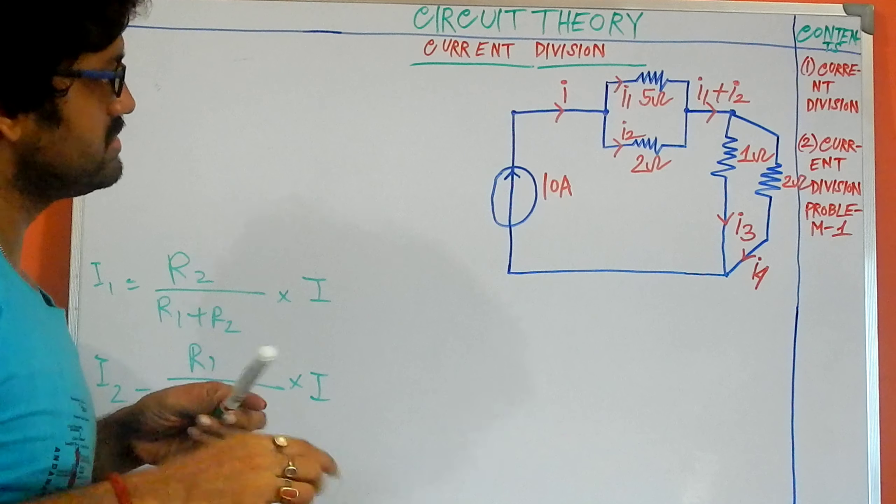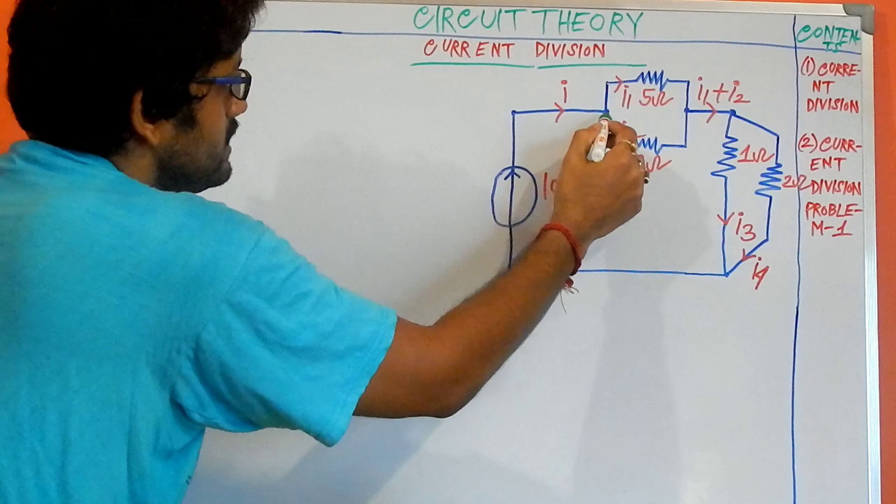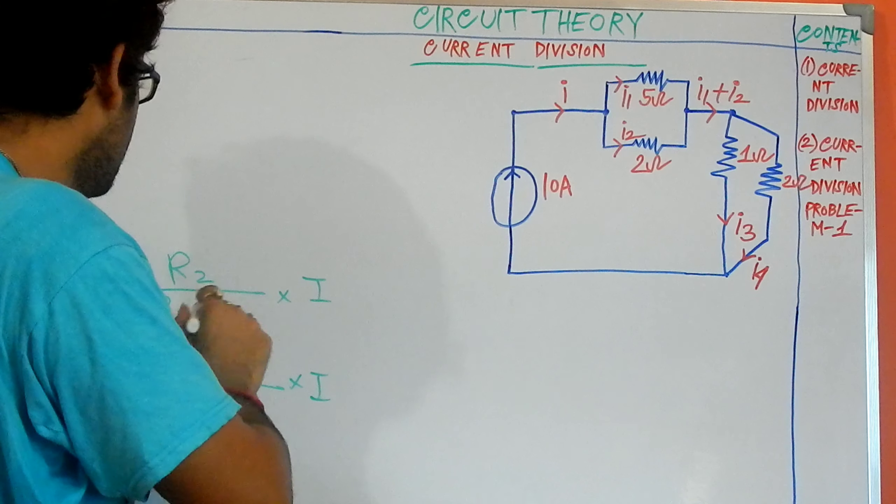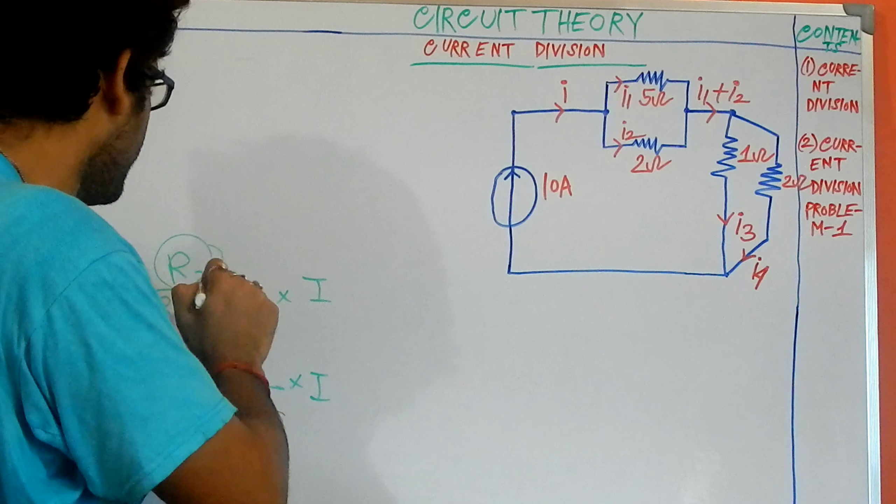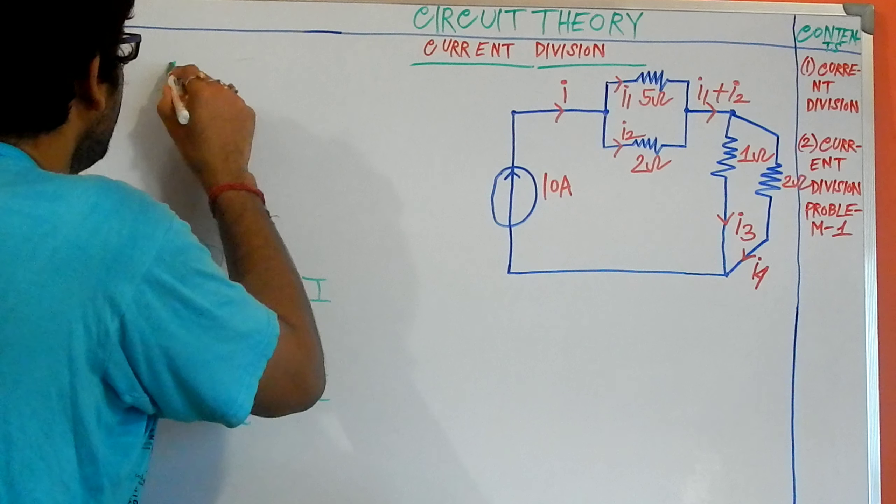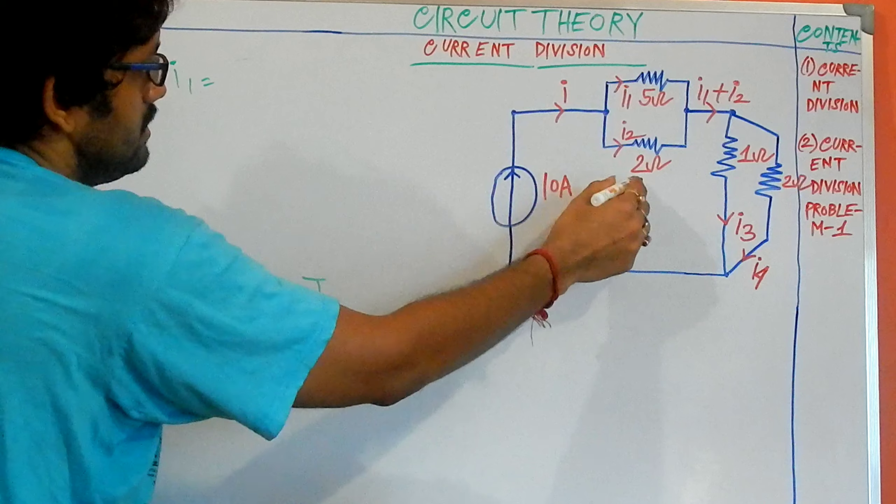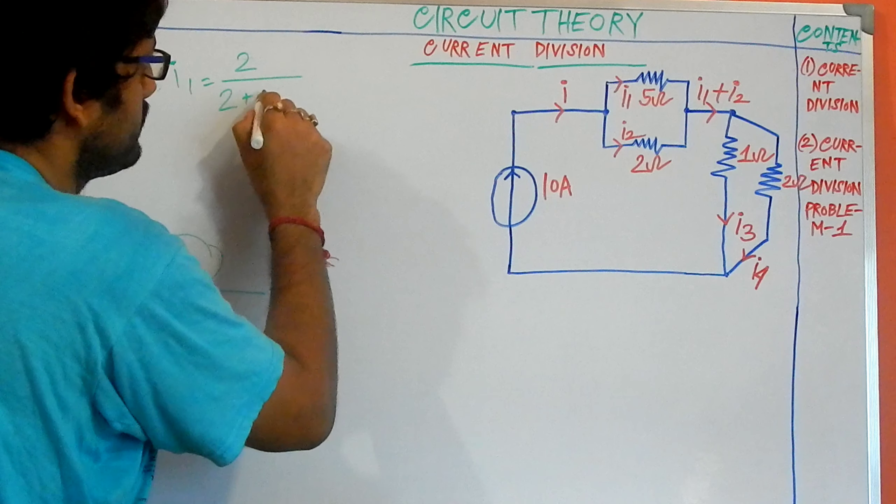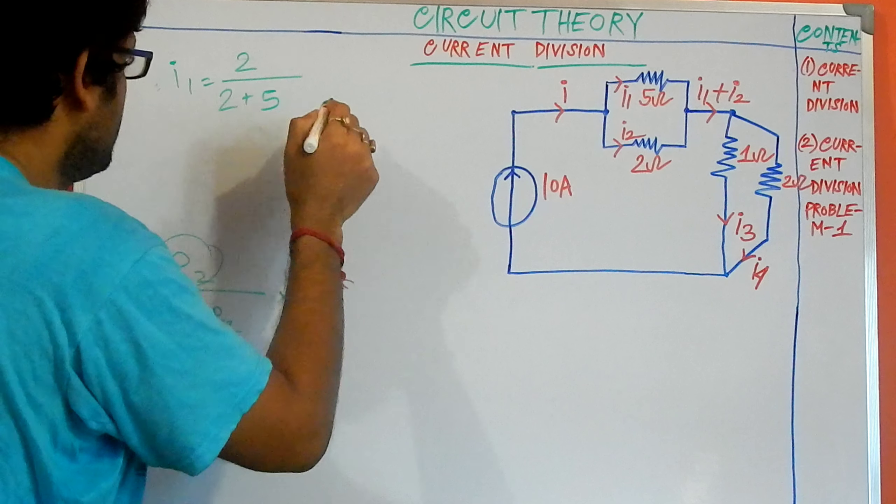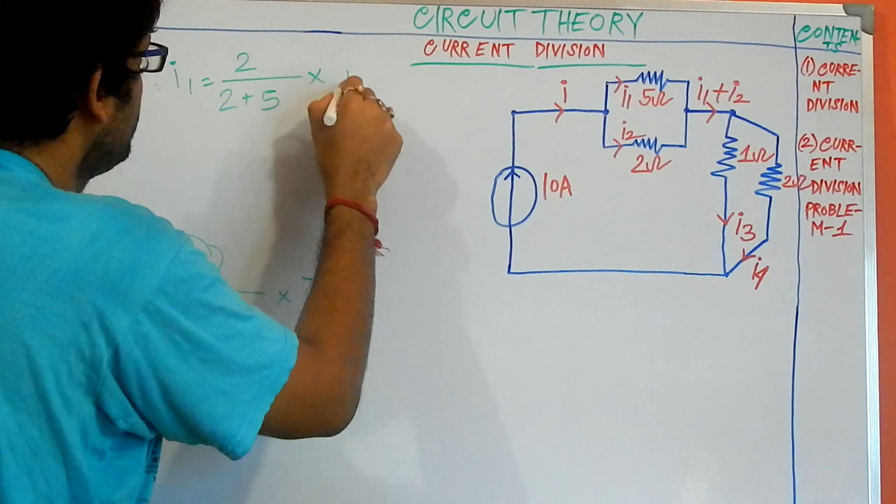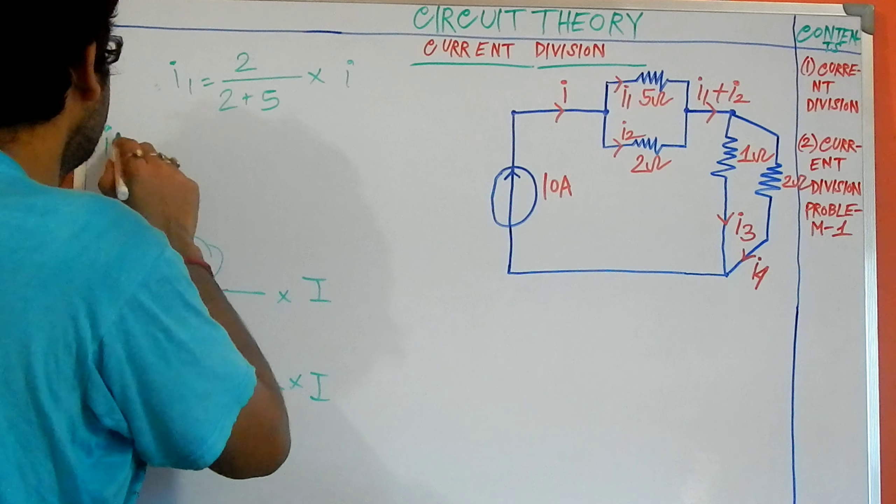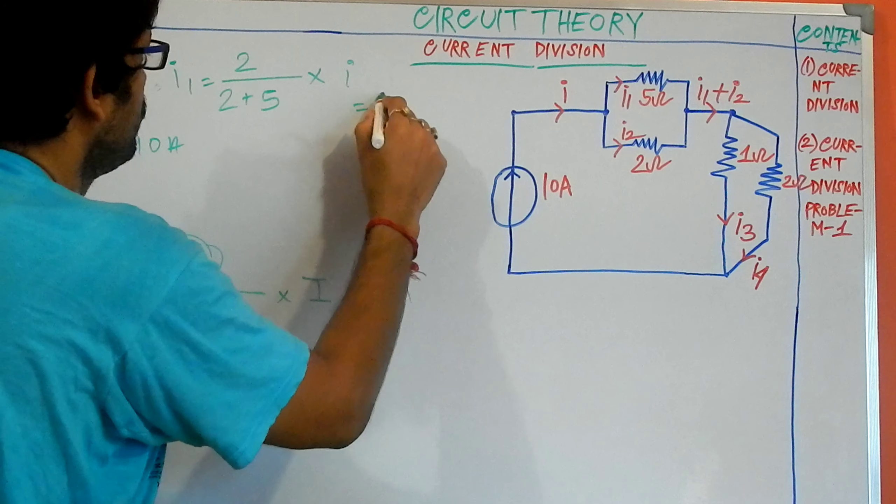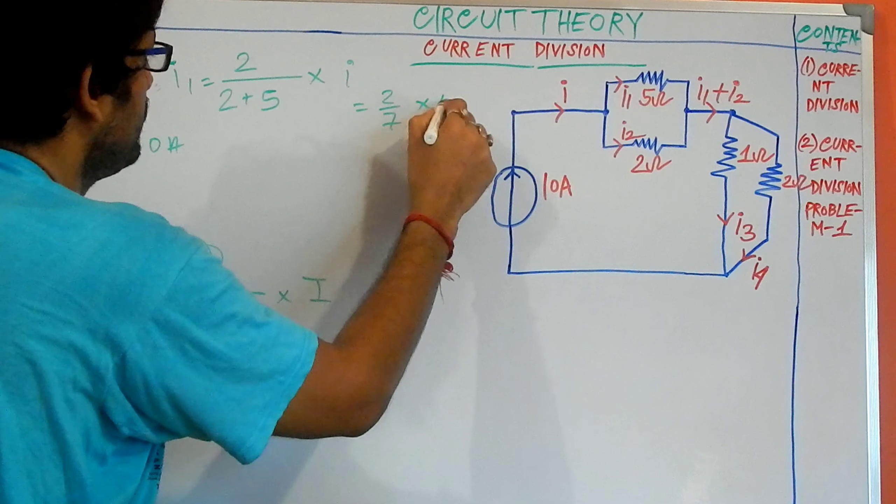What is the value of Iy? As the current is being divided between the two branches, the reverse resistance is taken. So the value of Iy is 2 divided by 2 plus 5 multiplied with our total I. The value of total Iy in this circuit is 10 amps, so 2 divided by 7 multiplied with 10.